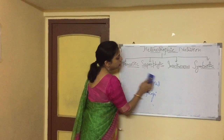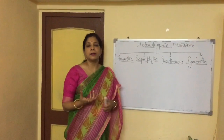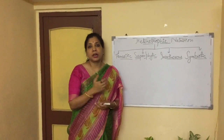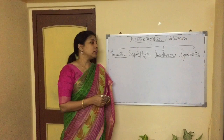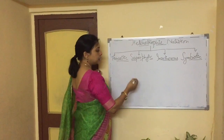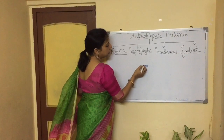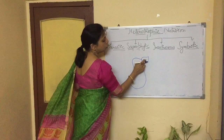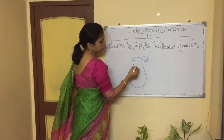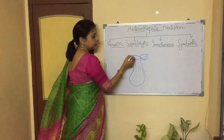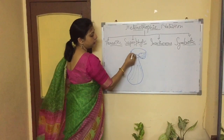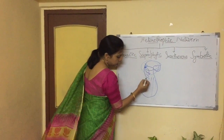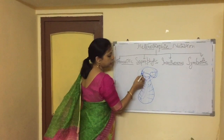Next is insectivorous nutrition — very interesting. Insectivorous plants are plants which eat insects. For example, the pitcher plant, whose scientific name is Nepenthes, and Drosera. The pitcher plant is a green plant, but its leaves form a pitcher-like structure with a lid over it. Whenever an insect comes and sits on it, the lid closes and the insect moves inside the pitcher. The inner lining is full of hair and the insect gets trapped.